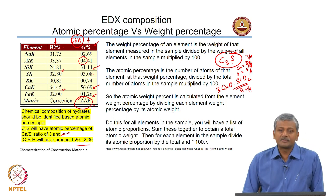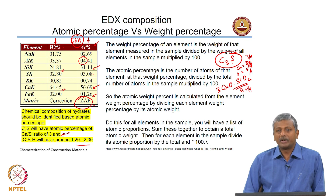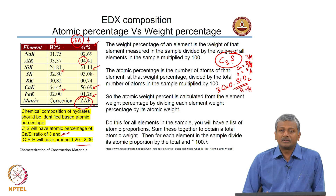Hello everybody. In the last class we were talking about the composition measurements that you can actually do by collecting the X-rays that are emanating from the sample after the electron beam strikes the sample. This composition is typically given as a percentage by weight of the component present in your sample.